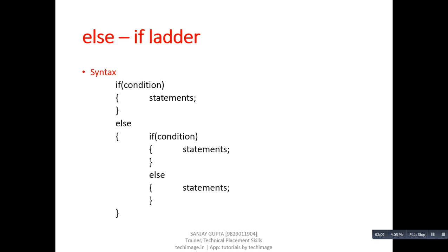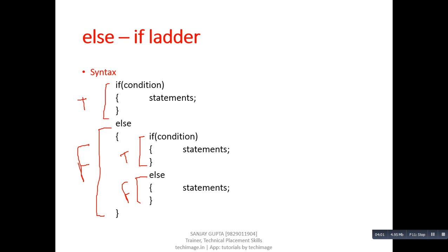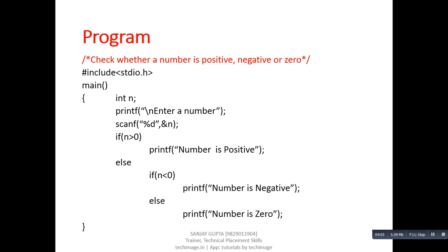Next is the else-if ladder. You can see the syntax here — it is also divided into two parts: first is if and the second one is else, with a true part and a false part. If we compare nested if with else-if ladder, in nested if the true part of if checks another condition, but in the else-if ladder the false part of the if condition checks another condition. So in else-if ladder, the else part contains another if-else segment.